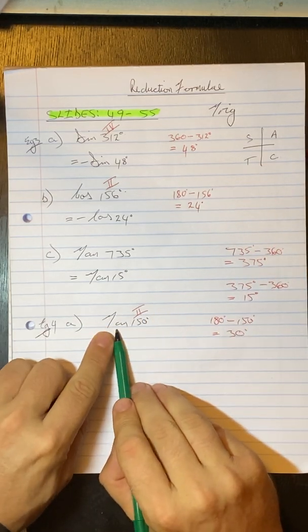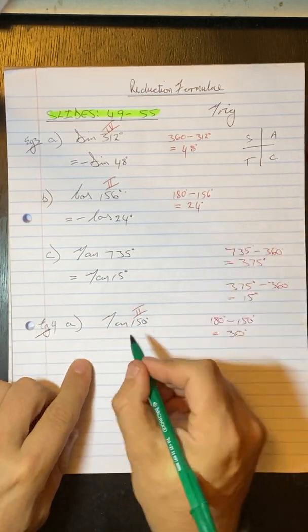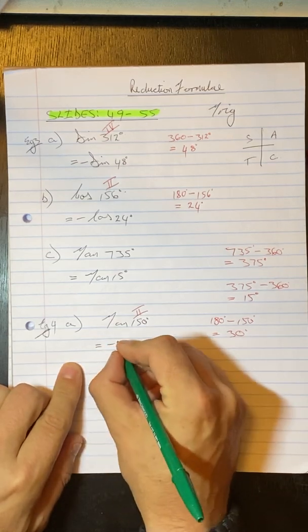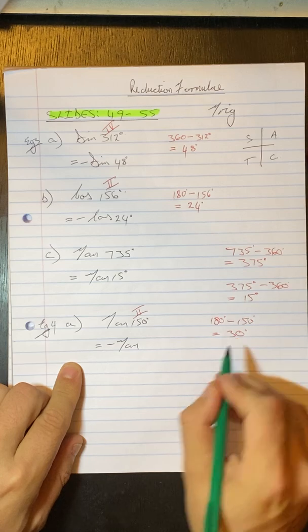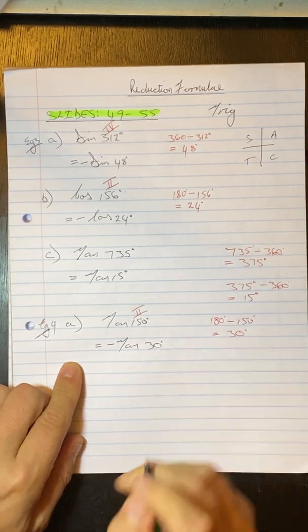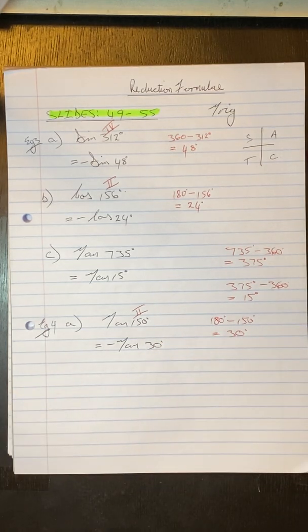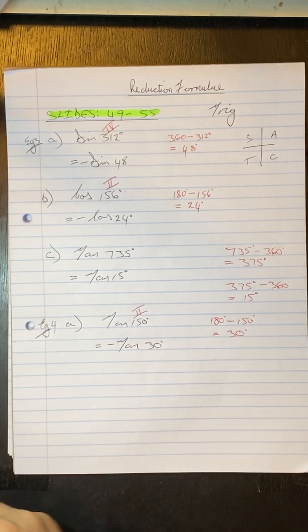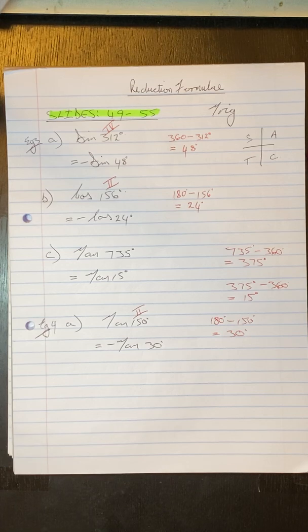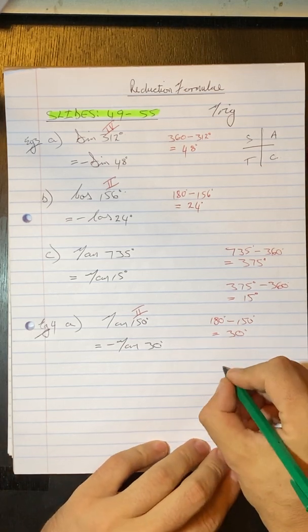So tan in the second is negative. And we've reduced this 150 to 30 degrees. So this is now a special angle. And you remember from our lesson the other day with special angles. We use our triangles. Okay. And with the one triangle we have.